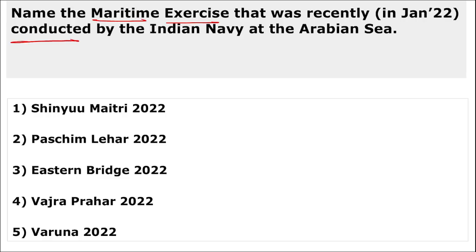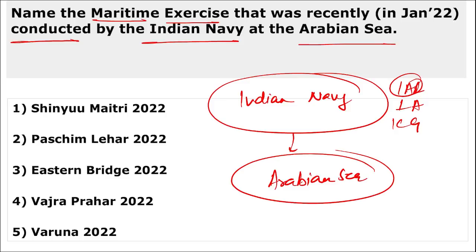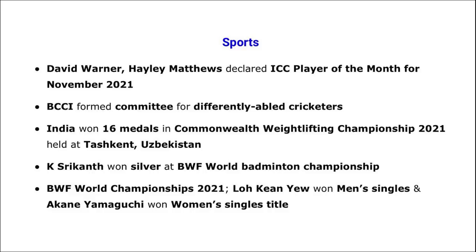Name the maritime exercise recently conducted by the Indian Navy in the Arabian Sea. The Indian Coast Guard, Indian Army, and Air Force also took part in this exercise. The name of the exercise is Prasthan Leher — mark this as highly important.